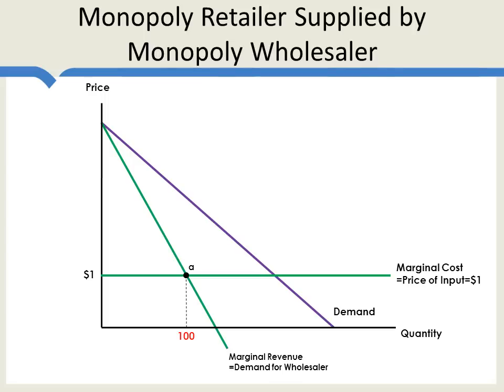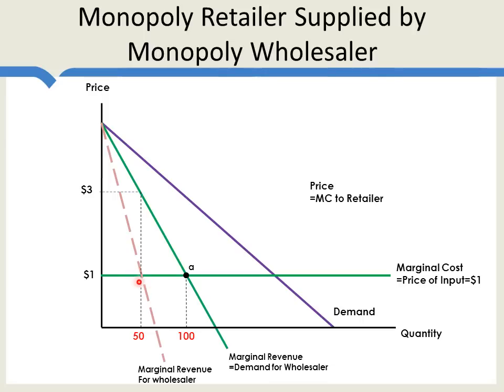What price will the wholesaler want to set? If this is the demand curve for the wholesaler, we need to find the marginal revenue curve for the wholesaler — that's the curve with just twice the slope, similar to what we had before. We can now see that the wholesaler will choose the point where marginal revenue equals marginal cost. This is now the true marginal cost for the wholesaler, and it sets a price of $3. Now that we know the wholesaler's price, that tells us what the input price is going to be for the retailer.